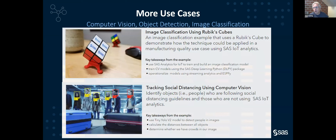Once you understand computer vision, object detection, and image classification, there are many applications available on the SAS developer pages. Another example was created for manufacturing using image classification on Rubik's cubes — being able to tell whether the cube was solved or unsolved, which is very useful in a manufacturing context for detecting defects, similar to the wallboard example Steve showed. Another example identifies social distancing guidelines in airports by identifying people, understanding how far apart they are, and calculating the distance between them. Examples are available with full documentation.